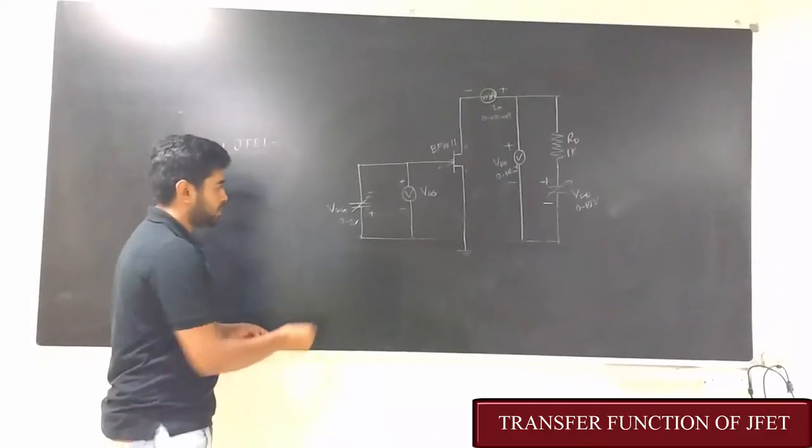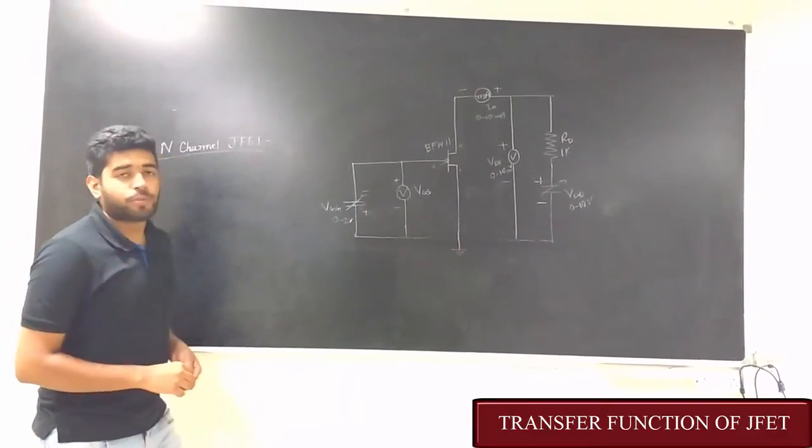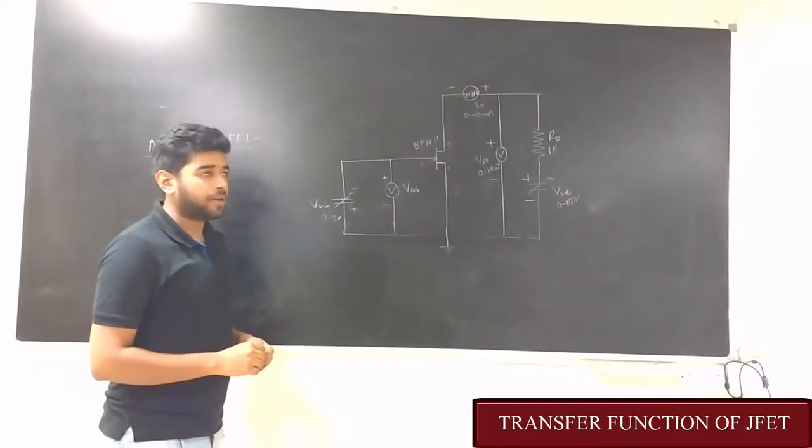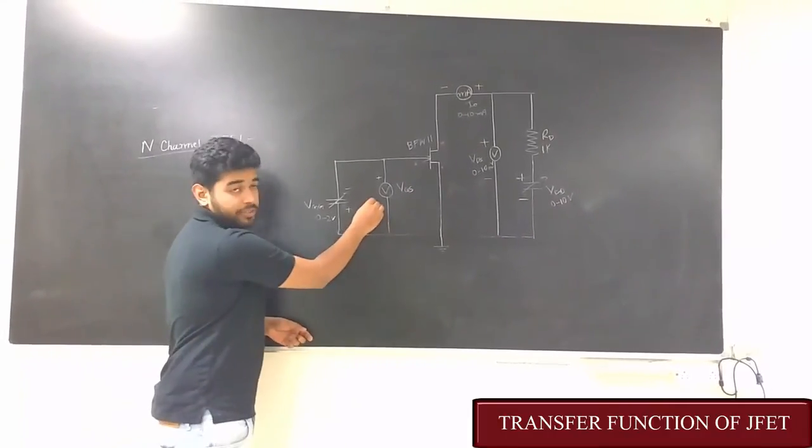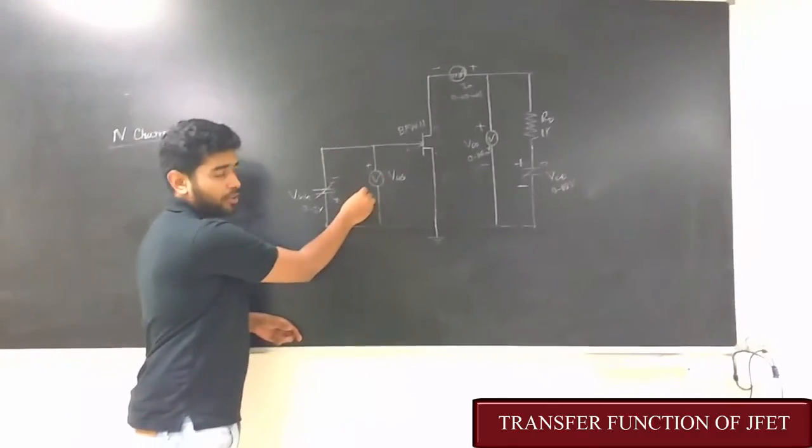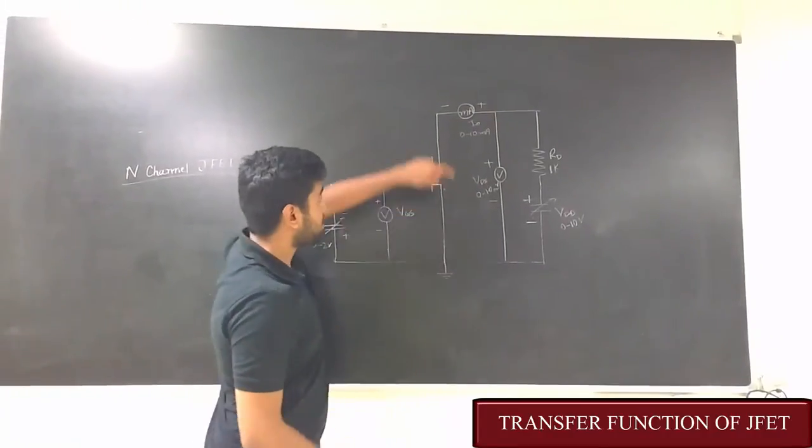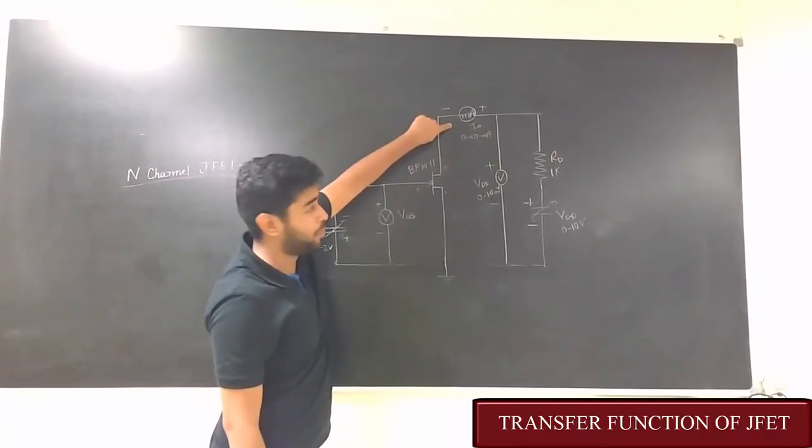We have two power supplies. The first one is VDD and the second one is VGG. Now the output is seen at the voltmeter and the milliammeter. This voltmeter gives us the gate to source voltage and this gives the drain to source voltage, and this milliammeter gives us the drain current.